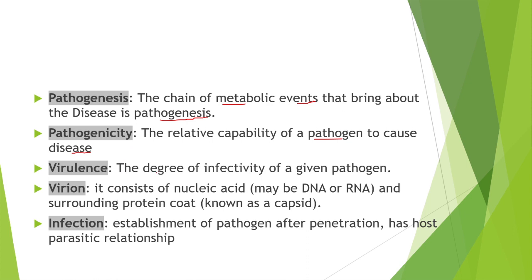Next term is virulence: the degree of infectivity of a given pathogen is known as virulence. Next is virion: it consists of nucleic acid and a surrounding protein coat known as capsid. Viruses can affect all organisms, but virulence specifically affects plants.